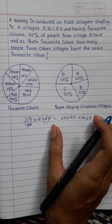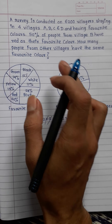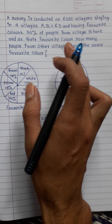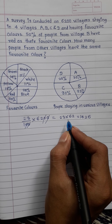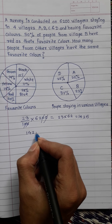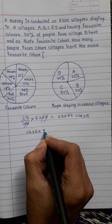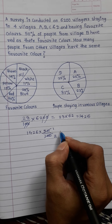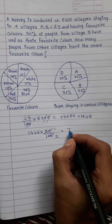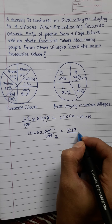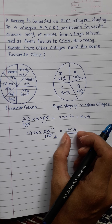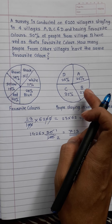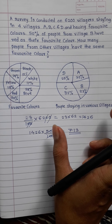Now, as we know that 50% of the people from village B have red as their favorite color. So, 1426 into 50 upon 100. This will become 713. It means 713 villagers like the red color who are staying in village B.